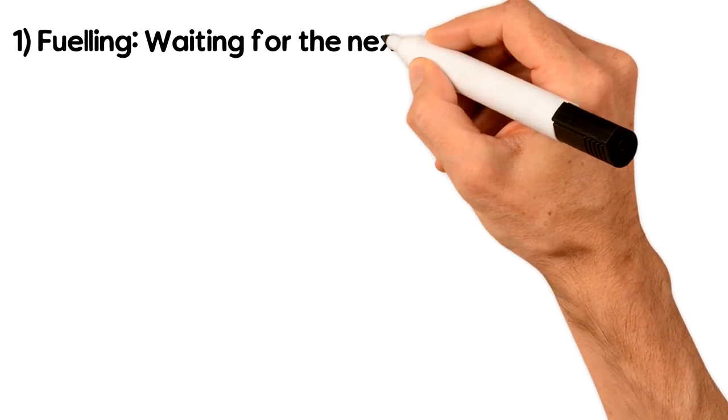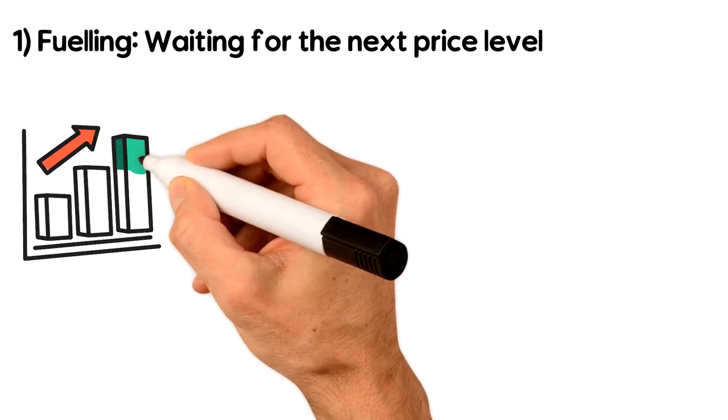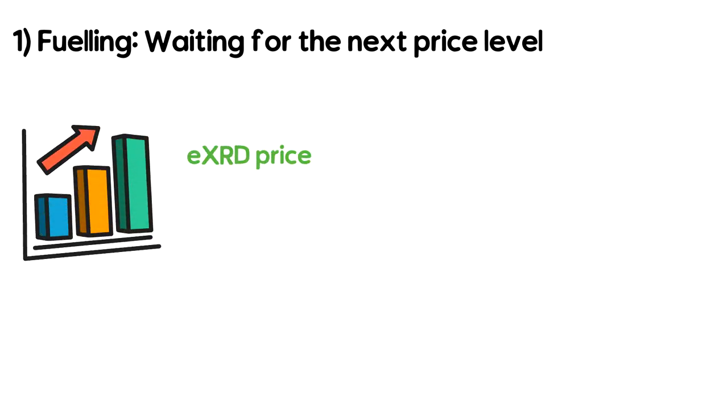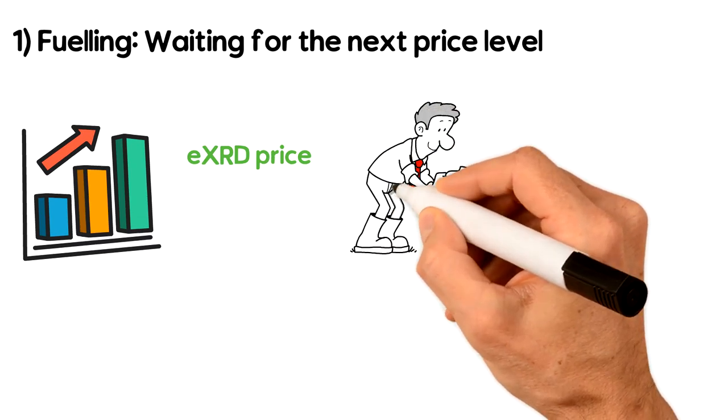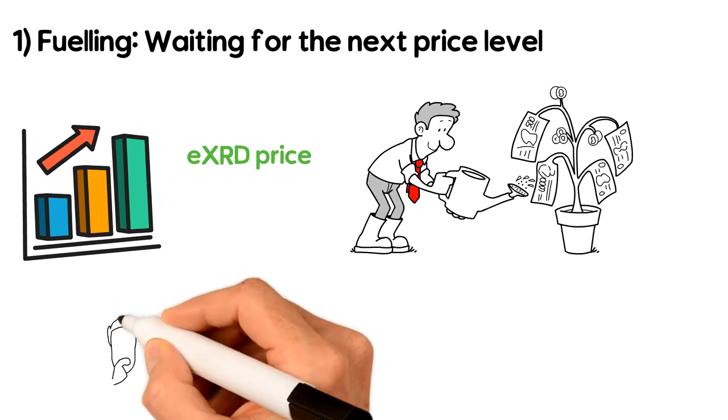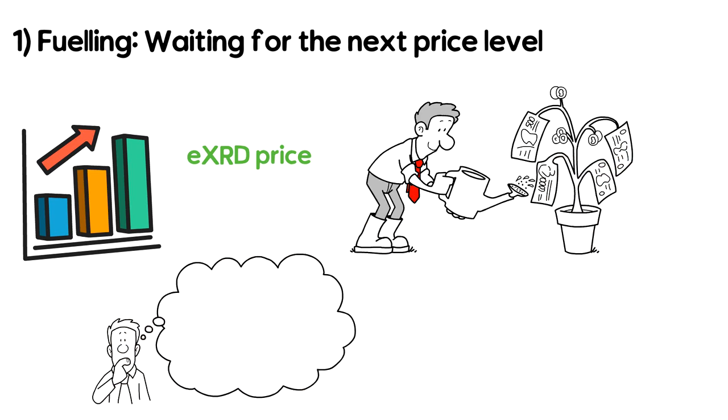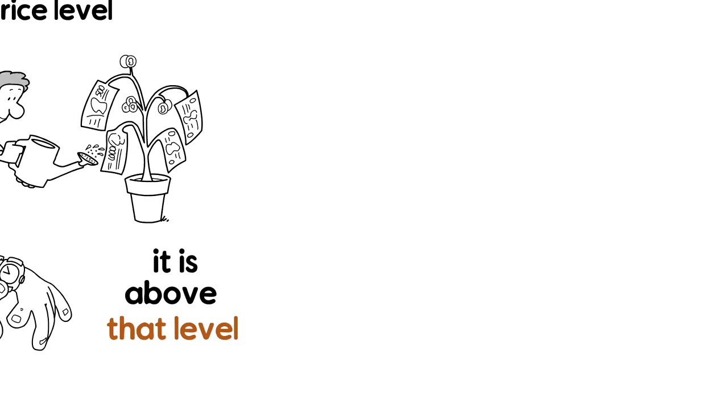1. Waiting for the next price level. The moving average of the EXRD price over the last seven days must reach a certain level. Using the moving average smooths out price volatility and means any increase in price must be sustained. If the moving average is not above the price level after seven days, then it will be checked every hour until it is above that level.